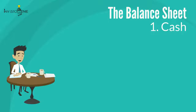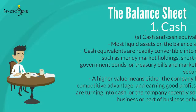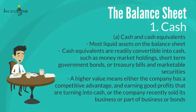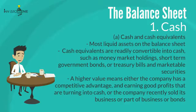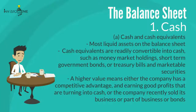The first component on the balance sheet is cash. There are two sub-branches: cash and cash equivalents, and short-term investments. Cash and cash equivalents are the most liquid assets on the balance sheet and are readily convertible into cash — such as money market holdings, short-term government bonds or treasury bills, and marketable securities. A higher value means the company has a competitive advantage and is earning good profits, or it recently sold its business or bonds.